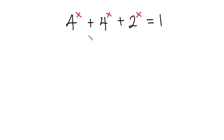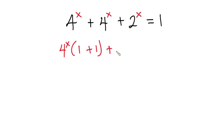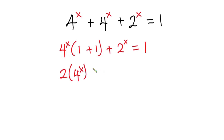So from here we have 4 to the power x in both of the first two terms, so I can factor it out. We have 4 to the power x times (1 plus 1), plus 2 to the power x, and this is equal to 1. Now 1 plus 1 is 2, so we have 2 times 4 to the power x, plus 2 to the power x, equal to 1.